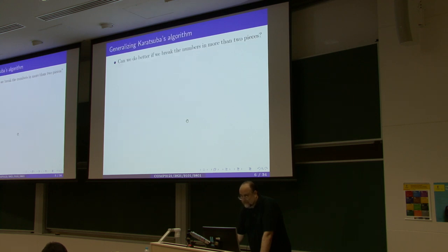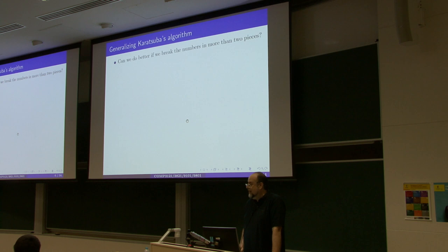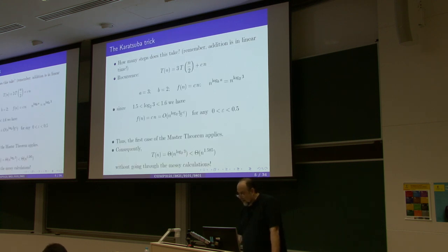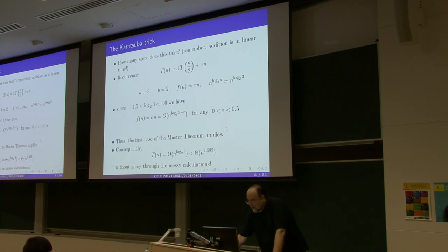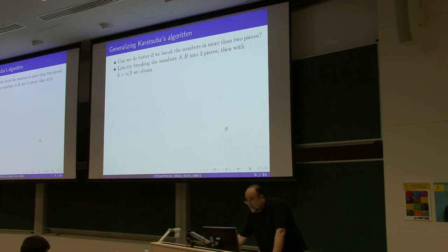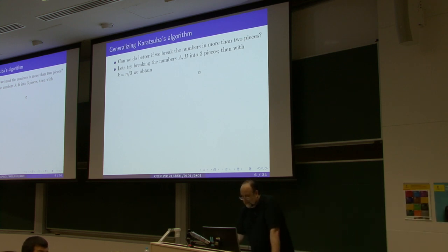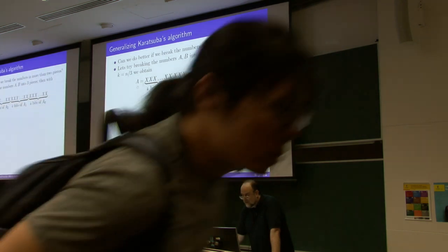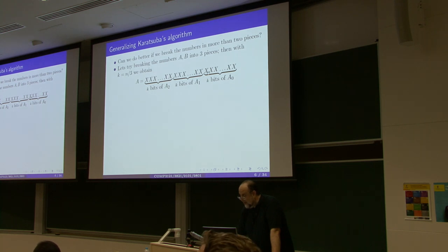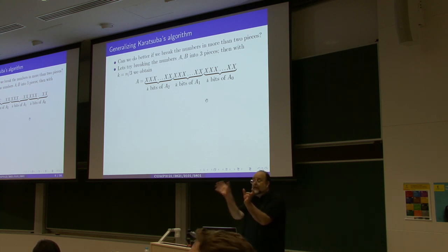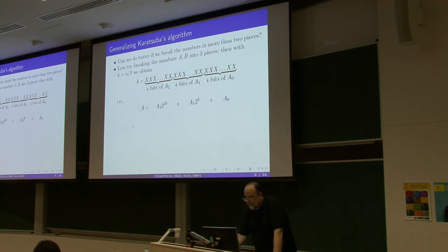If this works so well, maybe if we break the numbers into 3 pieces we will get an even faster algorithm. Let's give it a try. Assume you have k bits of a₂, k bits of a₁, and k bits of a₀ — I have partitioned a into approximately equal thirds.